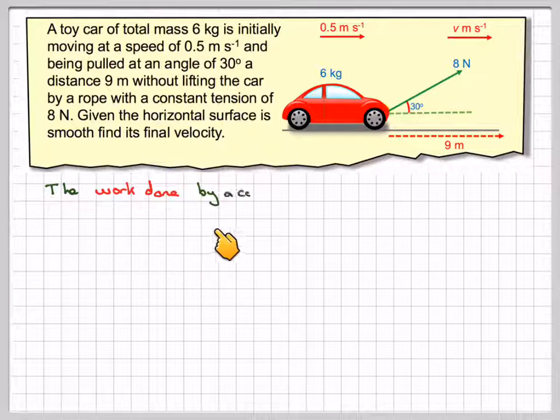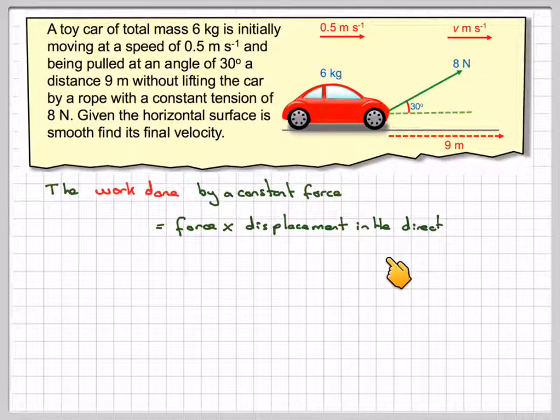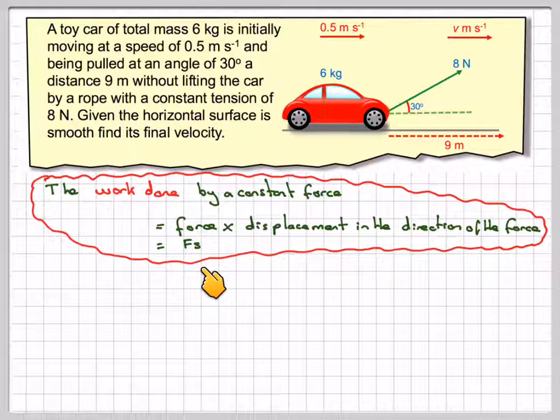So the work done by a constant force is the force times the displacement in the direction of the force, which is F times S.